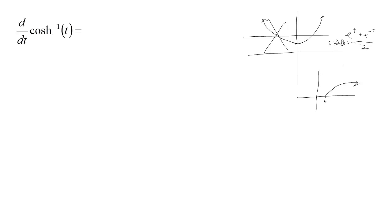You flip the x and y axes. So, for the cosh inverse to even exist, we need t to be greater than 1.